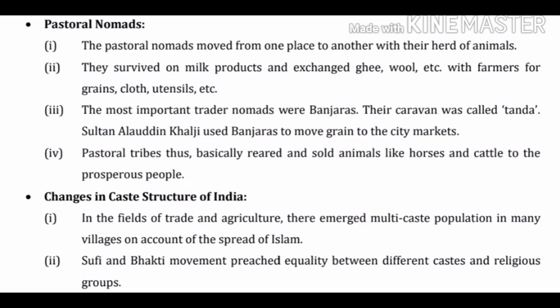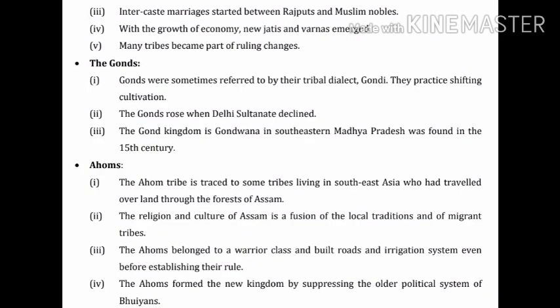These are important points on changes in the caste structure of India. Point three: inter-caste marriages started between Rajput and Muslim nobles. Point four: with the growth of the economy, new jatis and varnas emerged. Point five: many tribes became part of ruling clans.